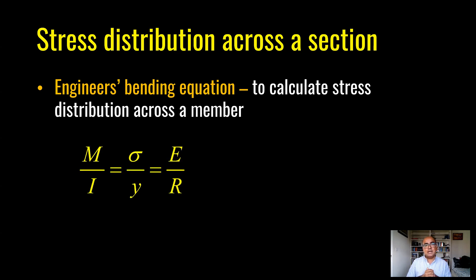This is the basic equation: M over I is equal to sigma over Y, E over R. We can rearrange this equation to get sigma is equal to M times Y over I.